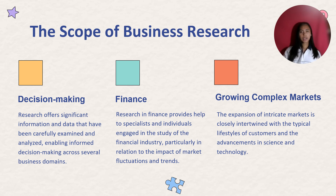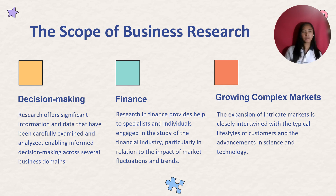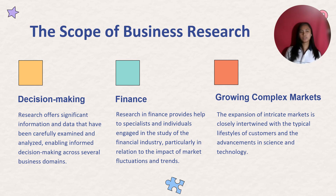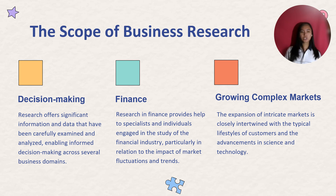For the sixth scope, we have growing complex markets. The expansion of intricate markets is closely intertwined with the typical lifestyles of customers and the advancements in science and technology. The presence of several retailers and the varying size and specializations within the business unit have resulted in a significant communication gap between manufacturers and customers.